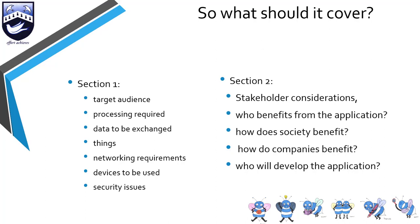The next section is the processing required — what processing needs to be done by the Gatwick Hotels Association to make this project viable. You should grab this from your M2. You should be talking about training, ordering, payments, and scheduling, and how this is going to go from not being in their establishment at the moment to being installed and usable.